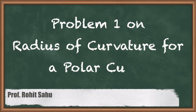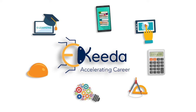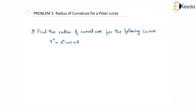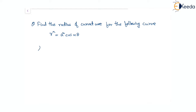Hello everyone. In this session we will see a question on radius of curvature for a polar curve. The given equation is in polar form, and we know that the radius of curvature for such a case is given by rho equal to r squared plus r1 squared, whole to the power of 3 by 2, divided by r squared plus 2r1 squared minus r times r2, where r1 and r2 are the first and second derivatives of r with respect to theta.